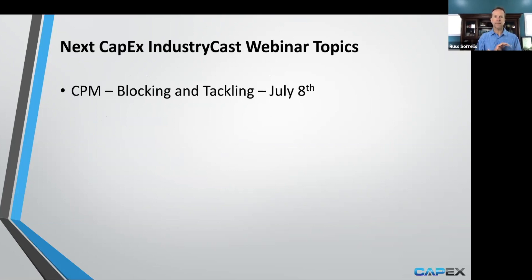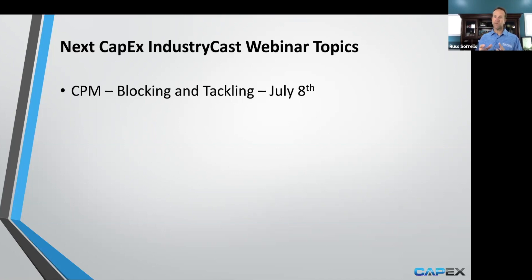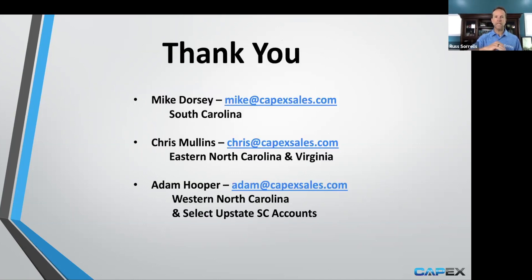Next we have capital project 101 — the blocking and tackling. We've gotten clear on defining the project, selected the team, created the RFQ, and selected the supplier. Now it's time to execute the project. I call this the blocking and tackling — the boring aspect of a capital project, but absolutely the most important aspect of managing it. If you don't do the blocking and tackling, which largely involves communication, you're going to end up struggling in the end. I'm excited to have that conversation next week.